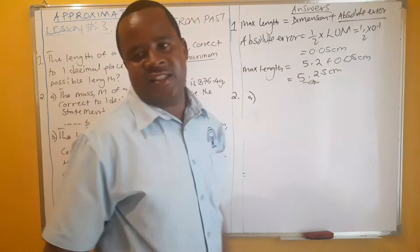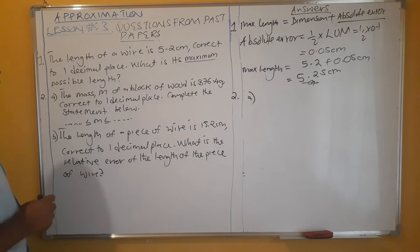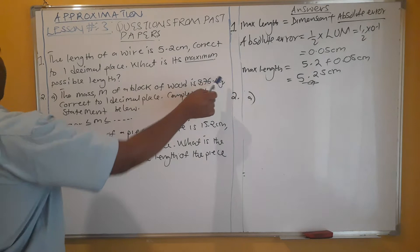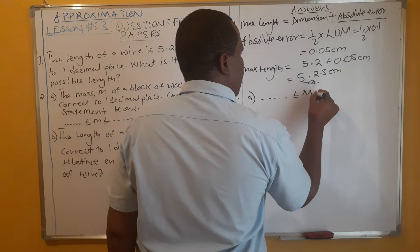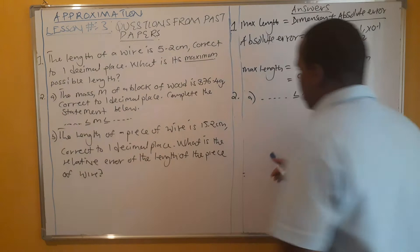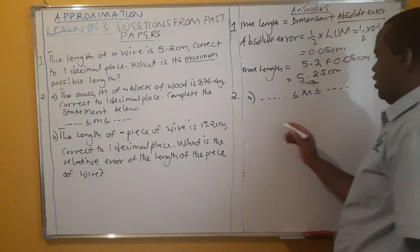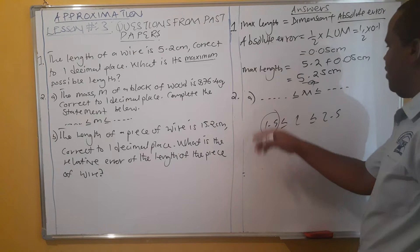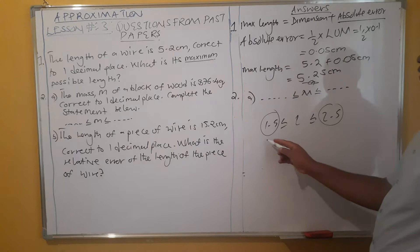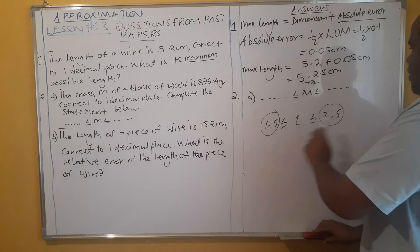Let's look at the second question. The mass m of a block of wood is 876.4 grams, correct to one decimal place. Complete the statement: dash dash ≤ m ≤ dash dash. What you are supposed to do is get the lower limit and the upper limit. This is an interval: the minimum value goes on the left and the maximum value on the right — the lower limit and the upper limit.